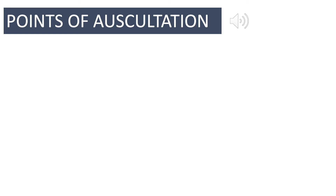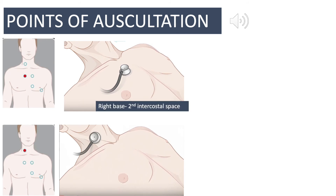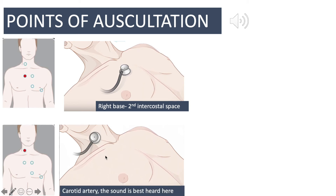The auscultation points for aortic valve stenosis include four main points. The first is the right base or the second intercostal space, shown on the left-hand side correlating to its position on the chest. The second point is the carotid artery — to confirm aortic valve stenosis, one should always confirm that the swoosh or clicking sound can be heard deflecting in the carotid region. Now let's listen to what aortic valve stenosis sounds like.